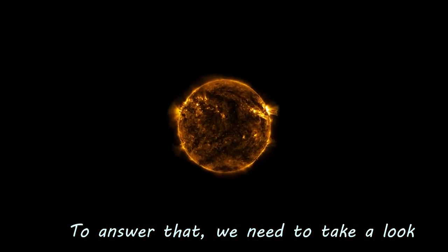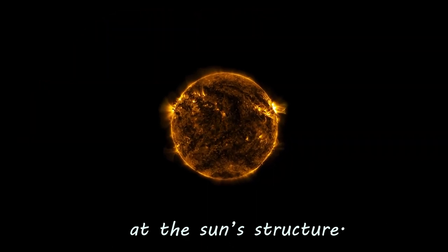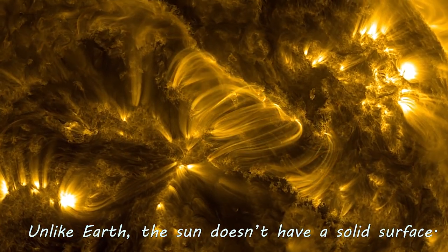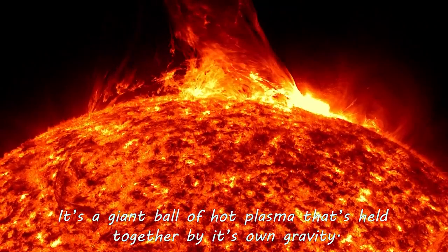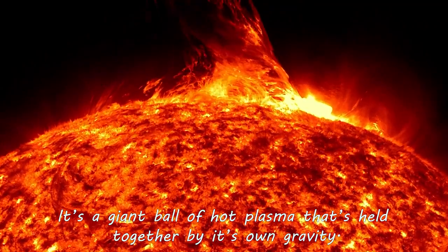To answer that, we need to take a look at the Sun's structure. Unlike Earth, the Sun doesn't have a solid surface. It's a giant ball of hot plasma that's held together by its own gravity.